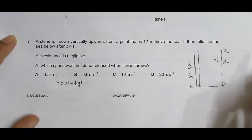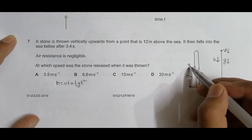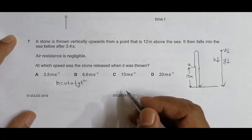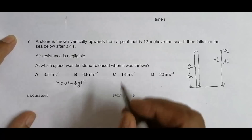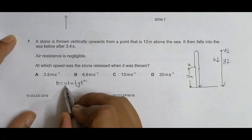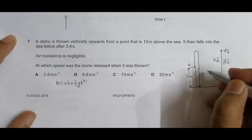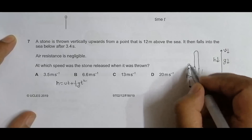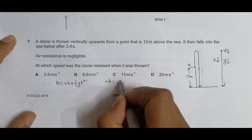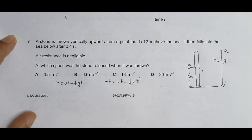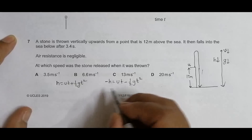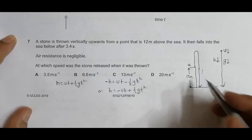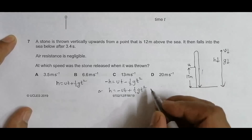In this case, h is downward, but the initial velocity u is in the reverse direction — upward. So we need to adjust the sign convention. If we take u as positive, then h should be negative and g should also be negative because it's acting downward. So the equation becomes: −h = ut − ½gt².